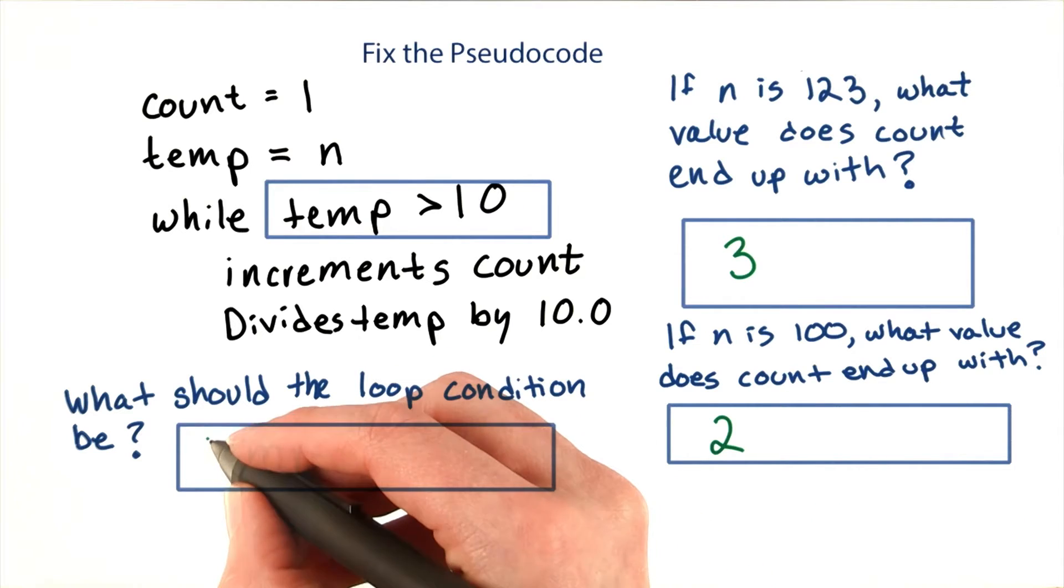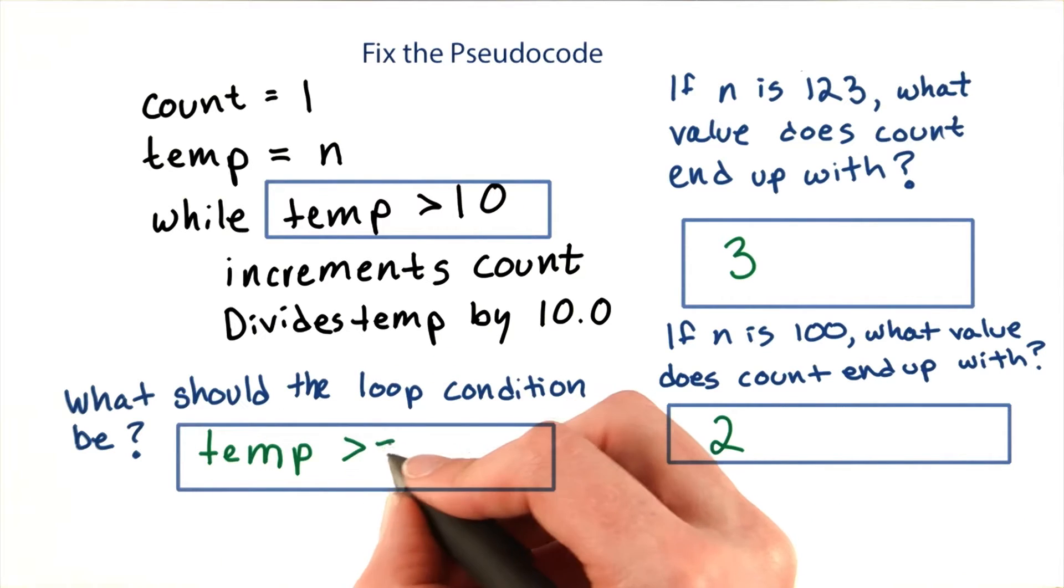The loop condition should actually be while temp is greater than or equal to 10.